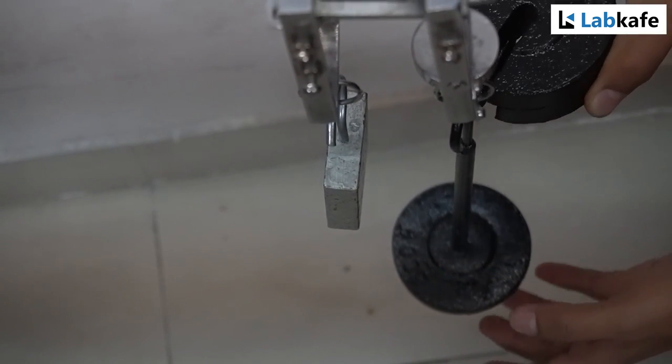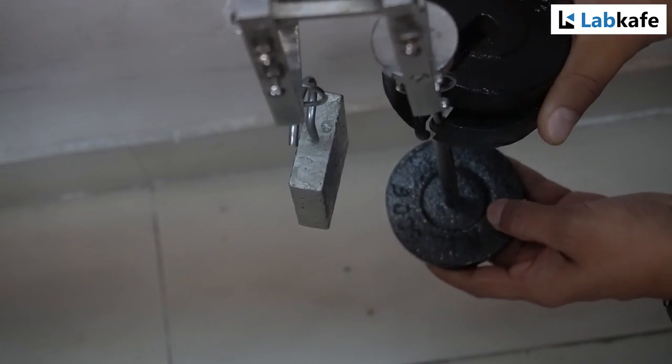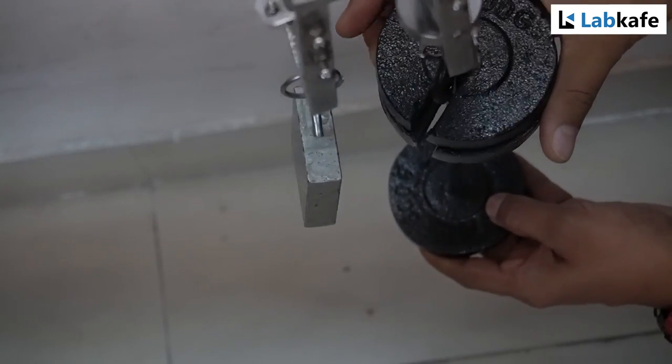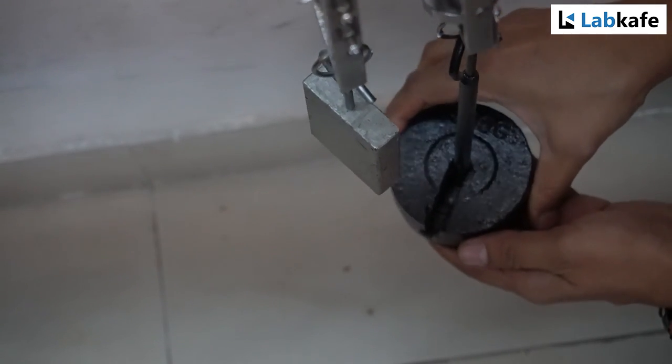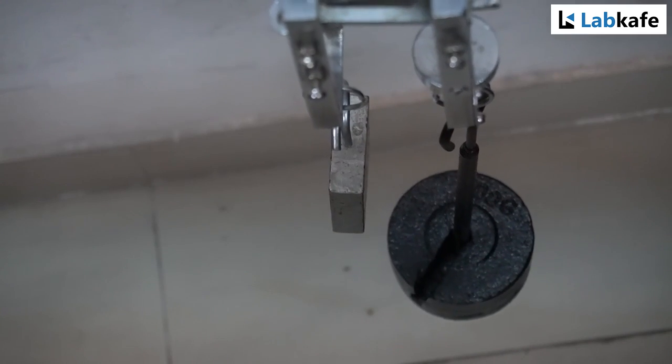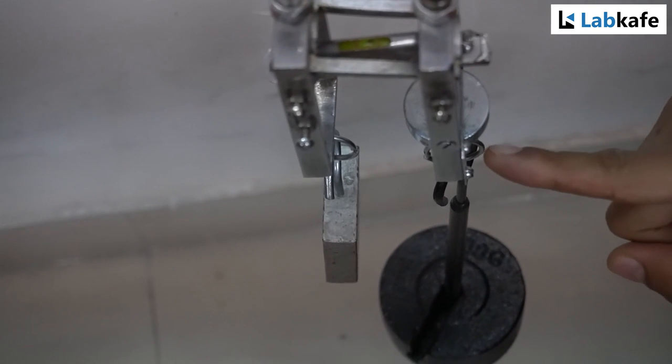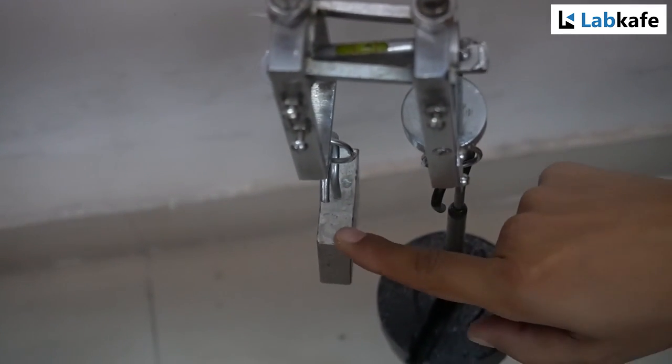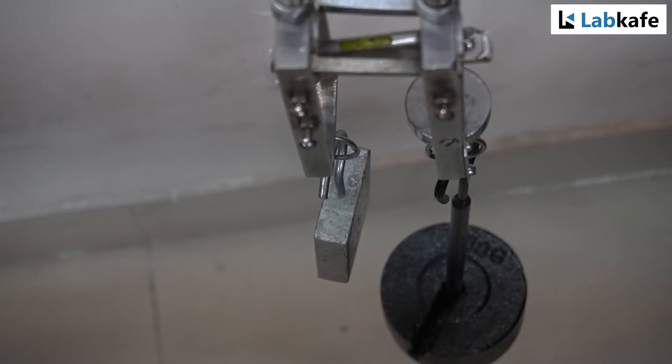Now, I will add one kg weight gently to the experimental wire and leave it for two minutes to complete the elongation process. Meanwhile, I can check the reading on the circular disk which is 64 under zero load condition. I will note it down.